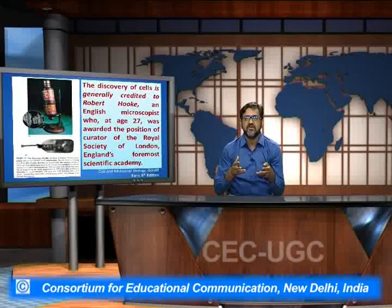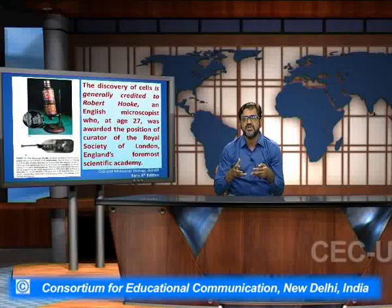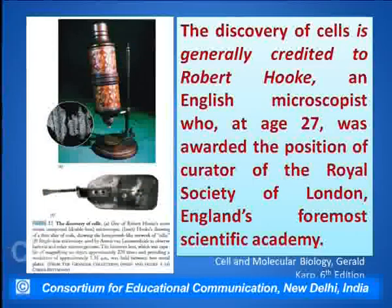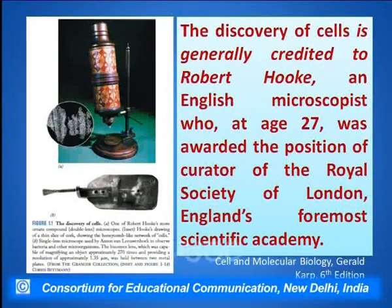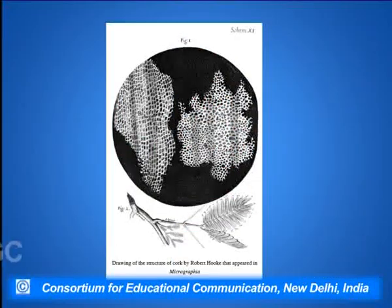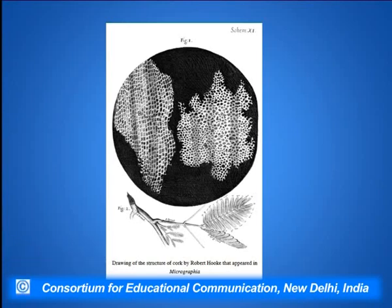This is the microscope or the lenses which was used by Robert Hooke to discover the first cells. The discovery of the cell is generally credited to Robert Hooke, who was an English microscopist. At the age of 27, he started looking with the help of these lenses or microscopes at the various types of cells. This is one of the first diagrams he drew of the cork cells which he watched under the microscope.